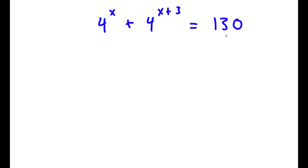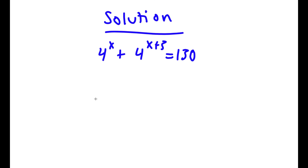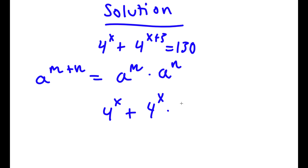So I have 4 to the power of x plus 4 to the power of x plus 3 is equal to 1 third. Now for this equation, I obviously want to find the value of x. If I have something in the form a to the power of m plus n, this is equal to a to the power of m times a to the power of n. So 4 to the power of x plus 3, we can rewrite as 4 to the power of x times 4 to the power of 3. Now this is equal to 1 third.